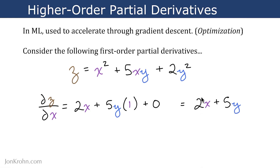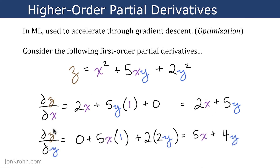So this is our first first-order partial derivative, del z del x. And then del z del y: in this case x is a constant, so it becomes 0. This term is pretty similar to what we did over here. Now 5x is the constant; we differentiate y, that becomes 1. And in the third term, 2 is the constant; we differentiate y squared, that becomes 2y. Simplifying this a little bit, 0 obviously disappears, and 5x times 1 is 5x plus 4y.